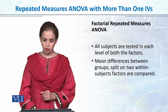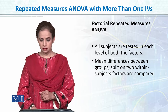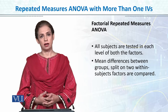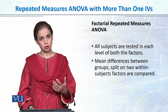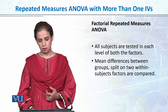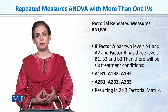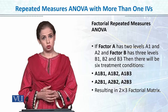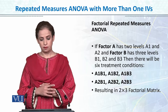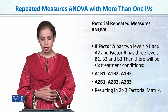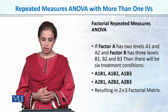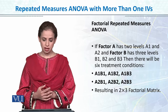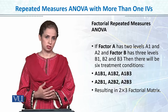Mean differences between groups split on two within-subject factors are compared to the groups in which we have done the treatment manipulation. For example, if we have Factor A with two levels — level 1 and level 2 — and Factor B with three levels — B1, B2, and B3 — there will be six treatment conditions.